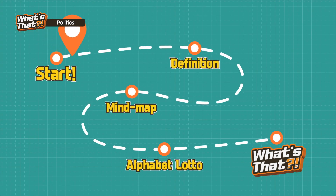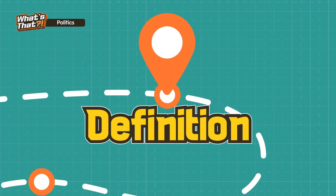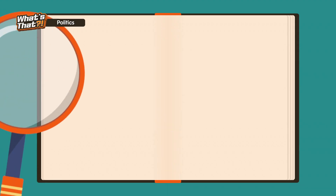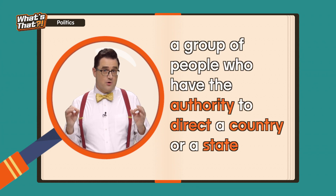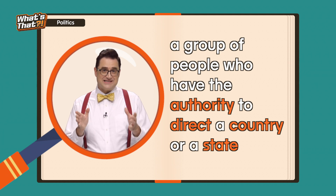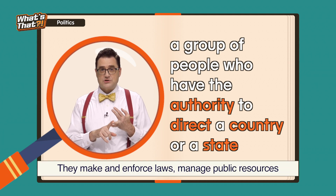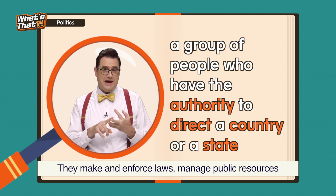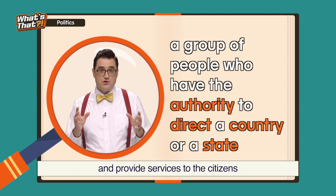Round one. Definition: a group of people who have the authority to direct a country or a state. They make and enforce laws, manage public resources, and provide services to the citizens.